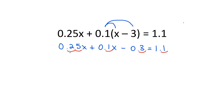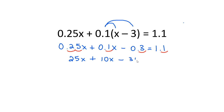To get rid of the decimals in the equation, we have to do the same thing to every term — move the decimal two places to the right in every term. In the first term, if we move the decimal two places to the right, that gives us 25x. In the next term, there's only one decimal place, so if I move the decimal again, I'm going to have to fill in that space with a zero. So that would give me 10x minus 30, and equals — if I move this two decimals to the right — I would get 110.